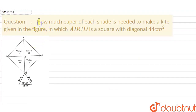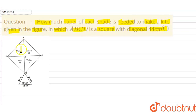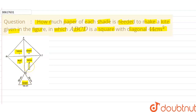Hello friends, what is given to you? How much paper of each shade is needed to make a kite given in the figure? In which ABCD is a square with diagonal 44cm. This kite shape is a square with diagonal 44cm. The regions are: yellow region, green region, red region, yellow one, yellow two, and a green triangle part. How much area is each shade — yellow, green, red — in the kite?